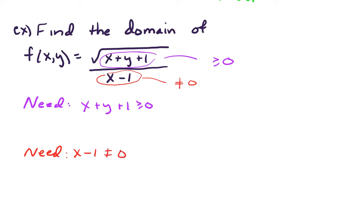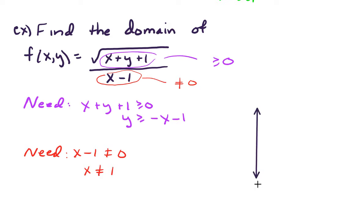So we have a little algebra to do. First, x plus y plus 1 greater than or equal to 0 implies that y must be greater than or equal to negative x minus 1. And from the denominator, x minus 1 not equal to 0 means x cannot equal 1. So let's draw our domain set — recall that the domain lives in the xy-plane.